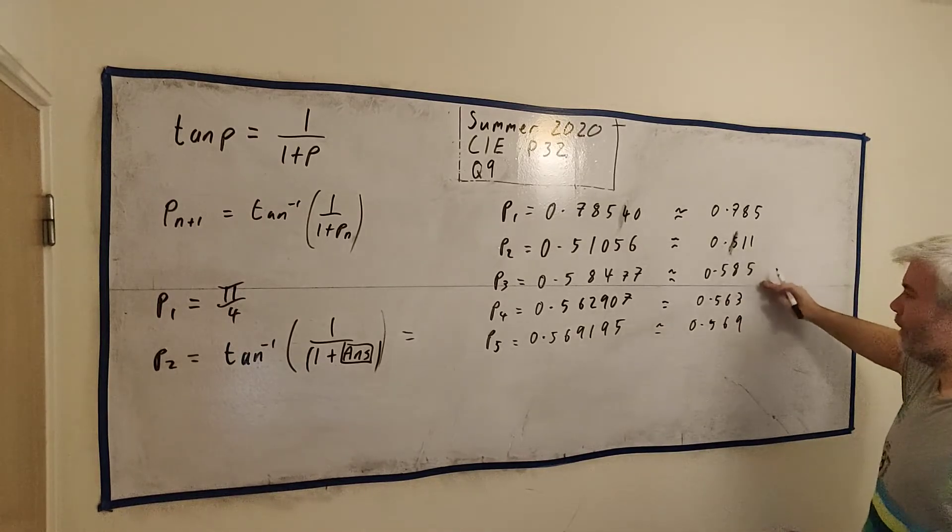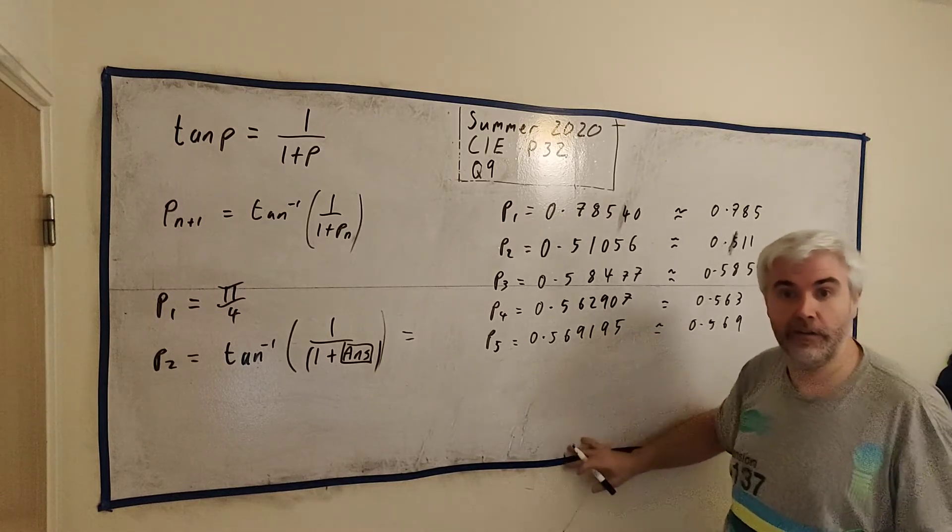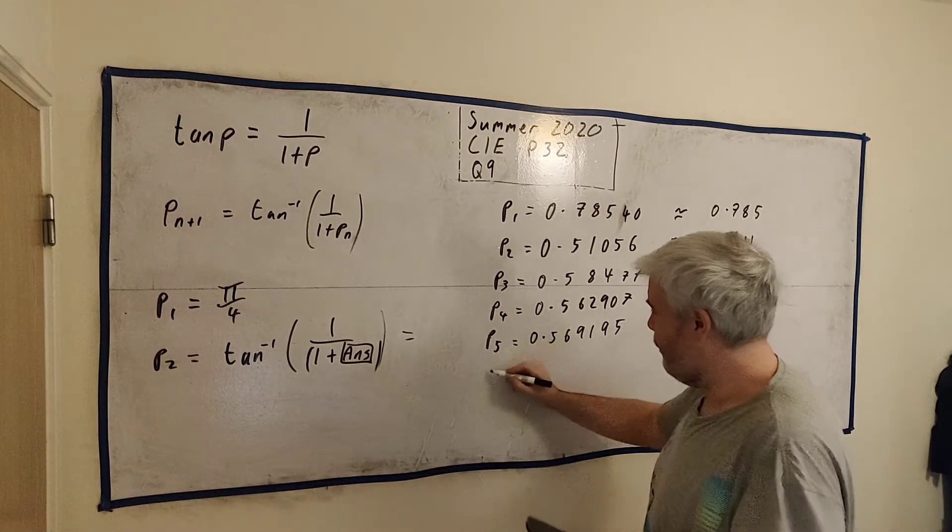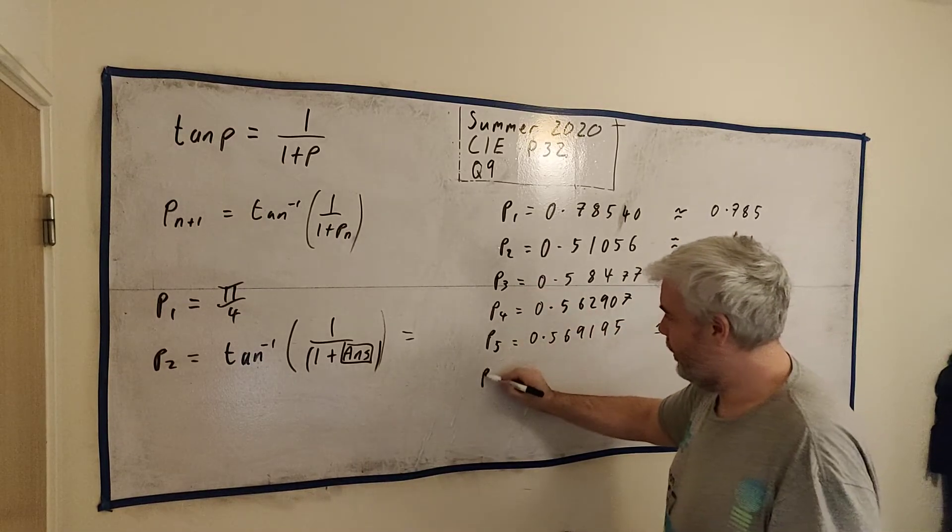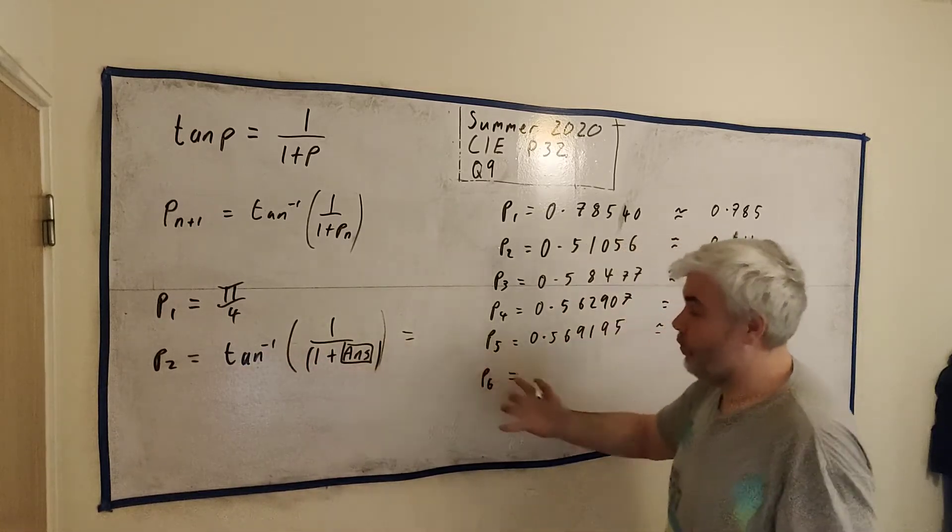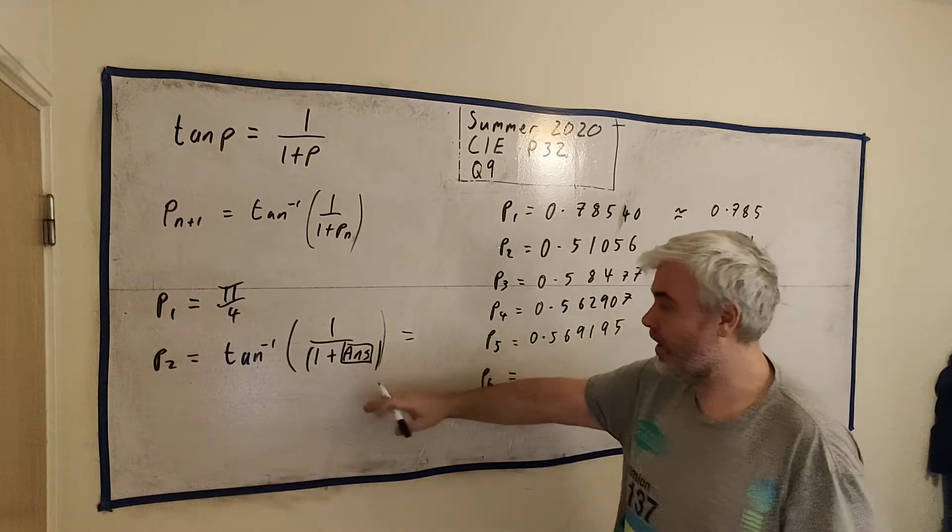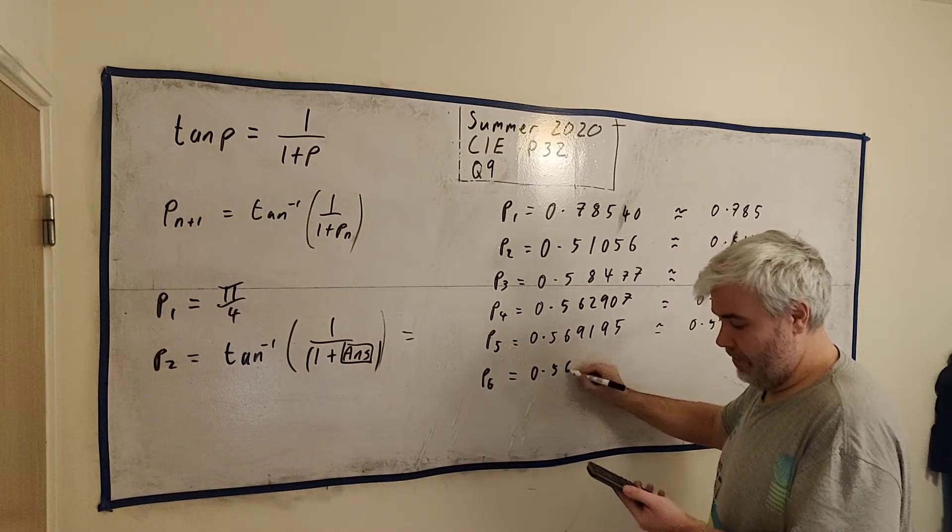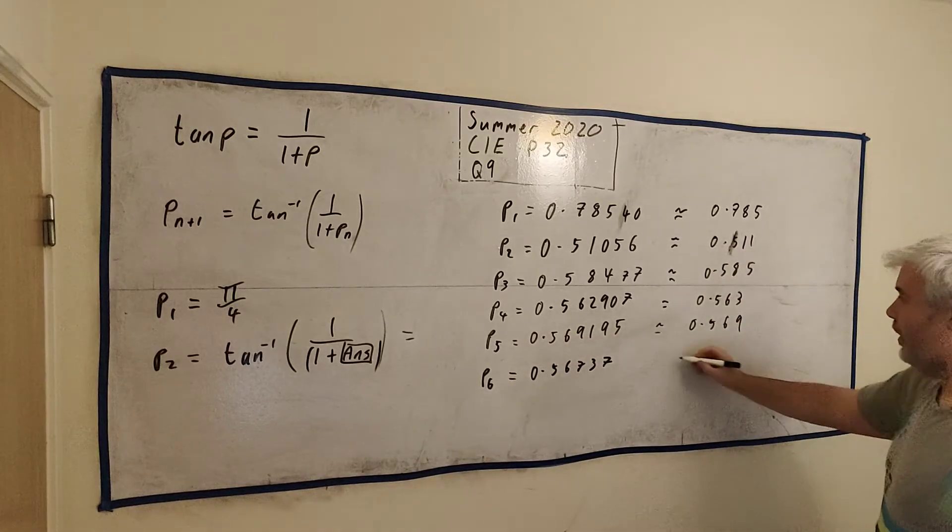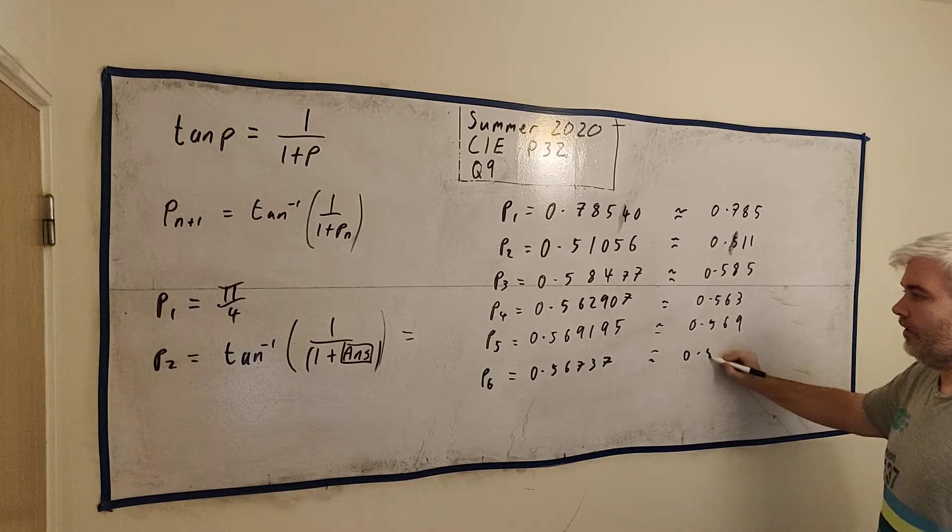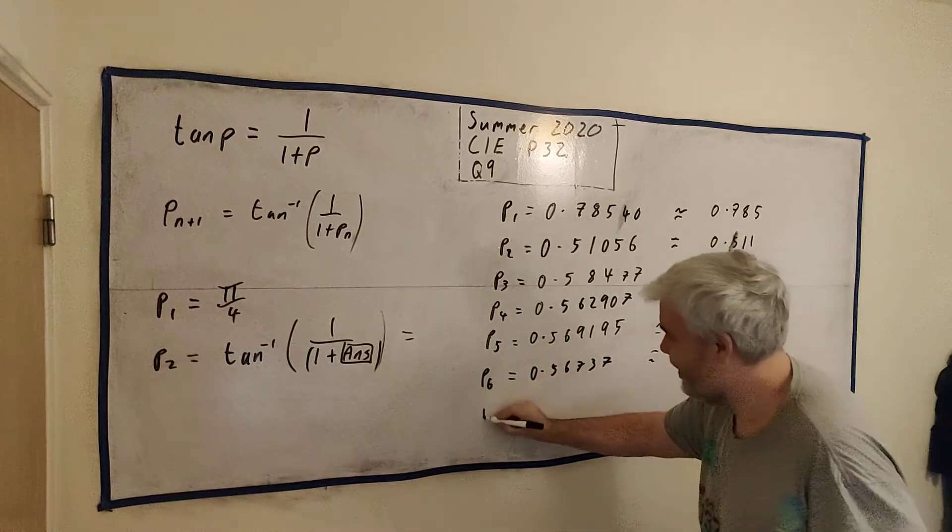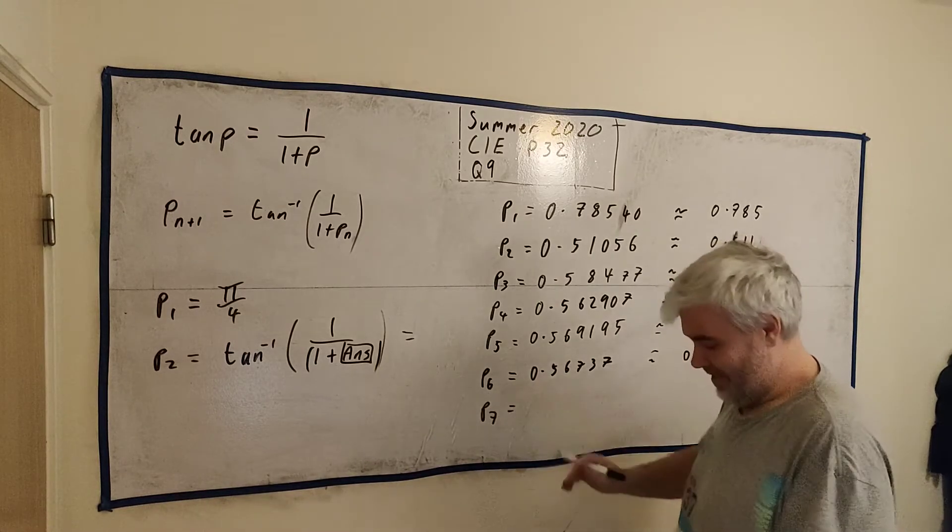If we do it again, let's also write three decimal places here. Because they want the answer correct to three. 0.785, 0.511, 0.585, this will be 0.563, we're zeroing in on a number here, not quite right yet. 0.569195, this is approximately 5, 6, 9. What we're looking for is when these start repeating. These will start repeating if you go long enough. But they only want this level of accuracy. Usually you're finished after P4 or 5.